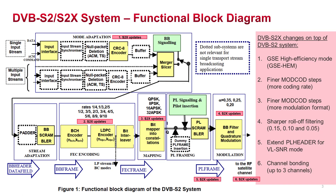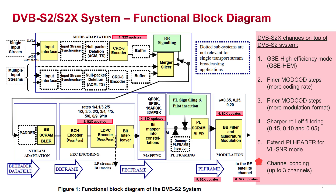This page shows the DVB-S2 function block diagram and how DVB-S2X is updated based on DVB-S2. At the baseband, DVB-S2X has updates for high efficiency mode support. In FEC encoding, DVB-S2X adds more coding rates and more modulation orders at 64, 128, and 256 APSK to support higher rate transmission. DVB-S2X also supports sharper roll-off factor down to 0.05, adds an option for physical layer frame to support very low SNR operation, and supports channel bounding up to three channels.